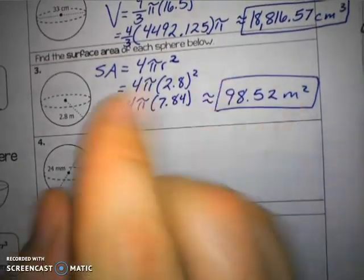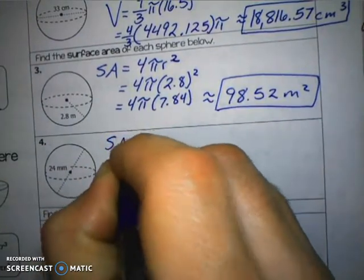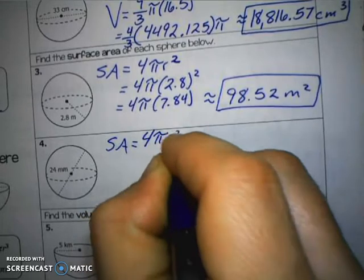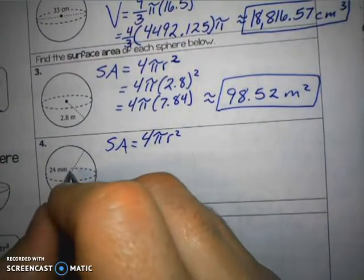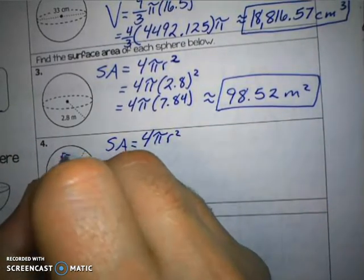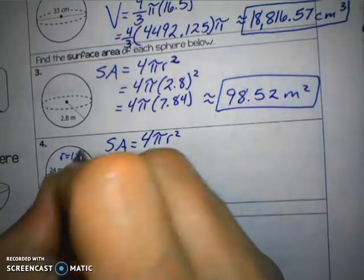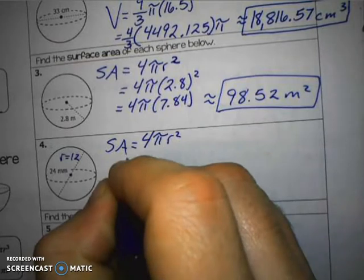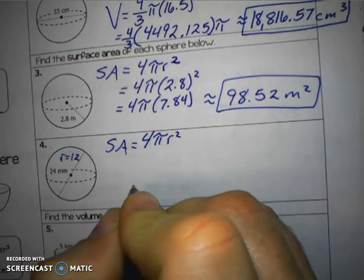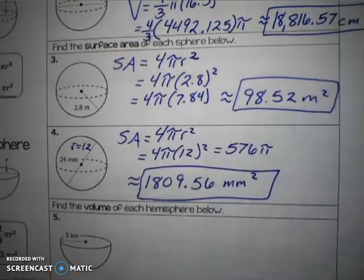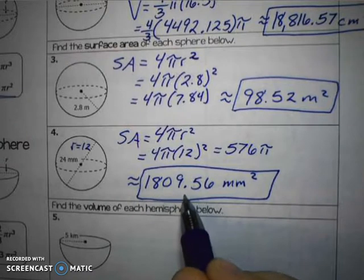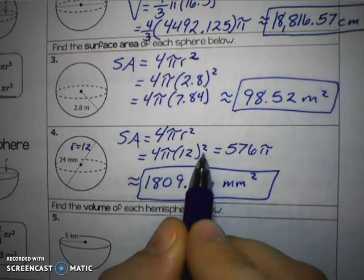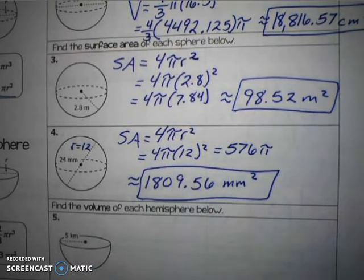Pause the video and try to find the surface area for number 4 using the formula 4π r squared. The radius is not 24 — the radius should be 12, because the diameter is 24. When you do 12 squared times 4, you get 576, and then multiply by π, giving the answer of 1,809.56 square millimeters.